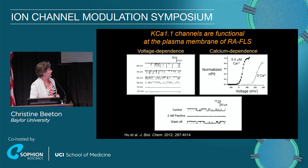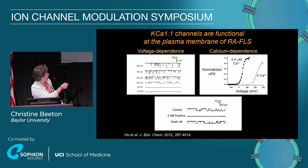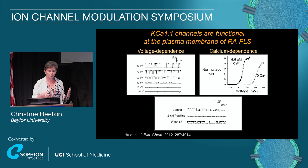So we did some electrophysiology. The channel at the plasma membrane of cells from patients with rheumatoid arthritis is voltage dependent, calcium dependent, and sensitive to paxilin — a well-known blocker of the KCA1.1 channel. With that, we were able to show that KCA1.1 is the major potassium channel at the surface of cells from patients with rheumatoid arthritis.